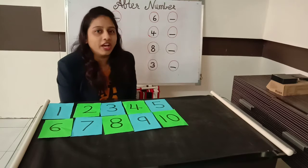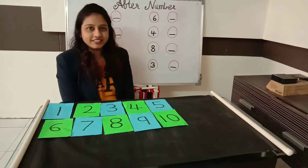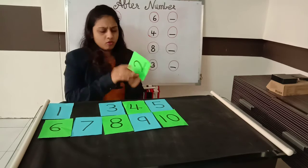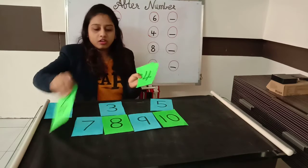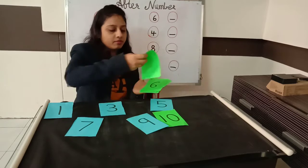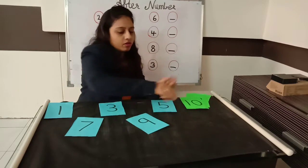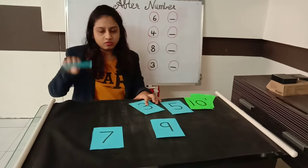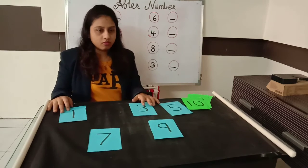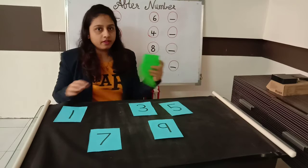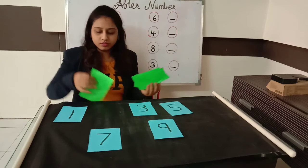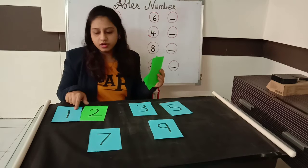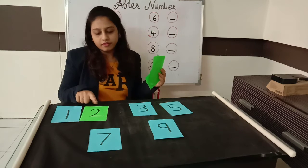You have helped me arrange the numbers. Now I am going to pick a green color number. I have to pick the green color number. Which number is this? 1 number. 1 after which number comes? 2 number. So this is the after number of 1 — number 2 comes after 1.